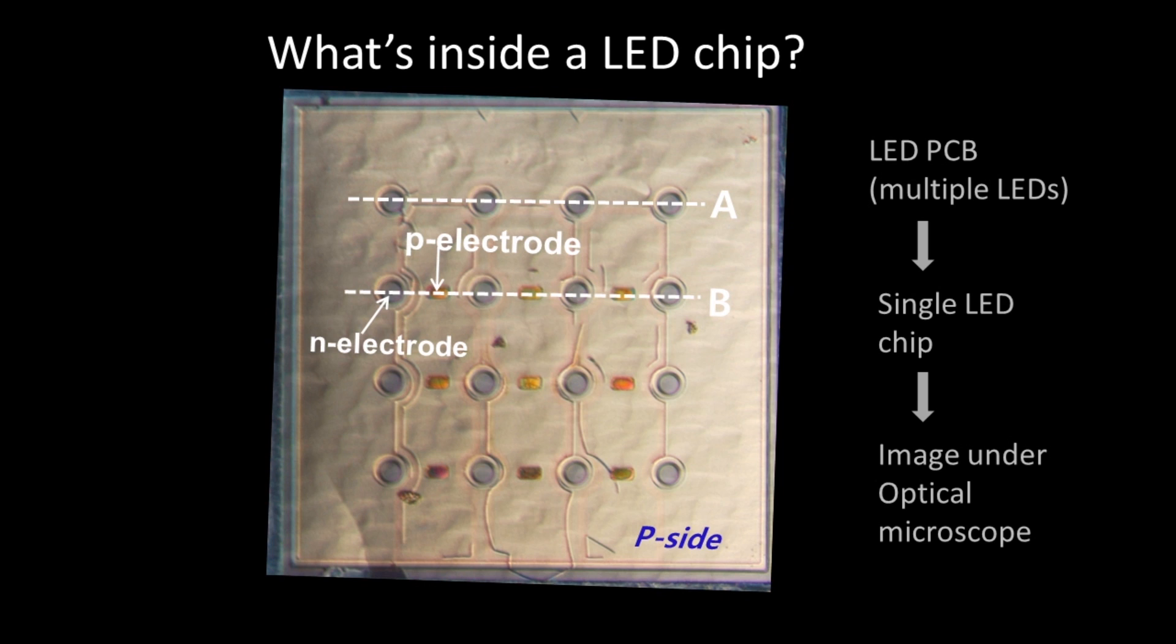Essentially what an LED does is it converts electricity into light and we need to be able to inject that electricity and we do that through the electrodes. We need to have both positive and negative charge carriers going into the LED and the positive charge carriers go through the P electrode, P for positive,